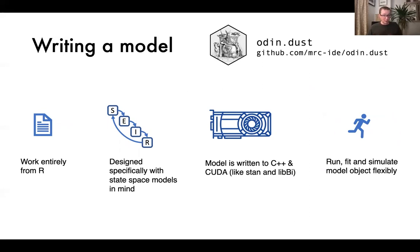The first part is how you write the model, and that's going to be in the Odin language. It's a language that looks a lot like R and not too much like C++. It lets you work entirely from R. The language itself is a domain-specific language designed specifically with states-based models in mind, so it does a lot of things to make your life easier when writing this kind of model. The model is written out to C++ if you're running on CPUs, or CUDA code if you want to run on GPUs. It's quite like Stan if you've used that before — a language a bit like R with some crossover with C++, but not all the full complexities, and able to create very fast-running models. In the end, you get a normal R object with simple functions to run the model, fit it, and simulate trajectories.